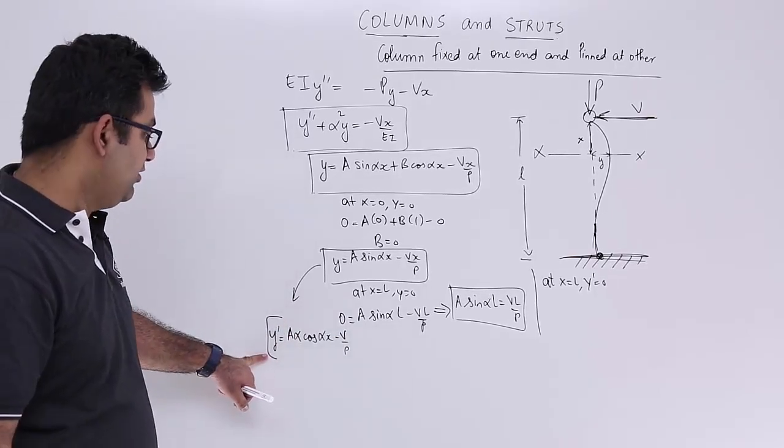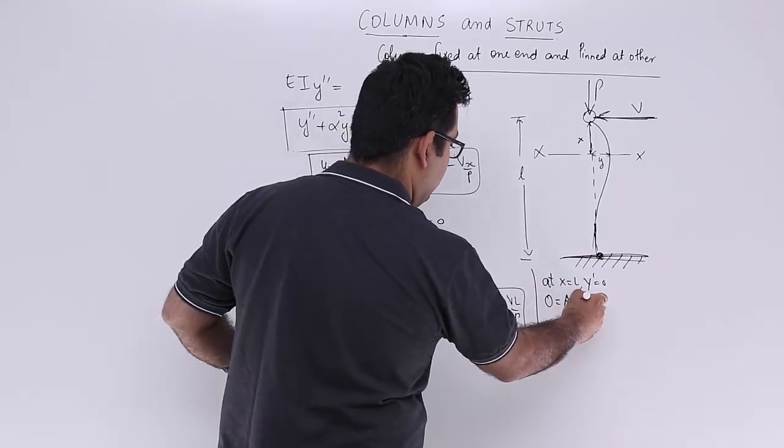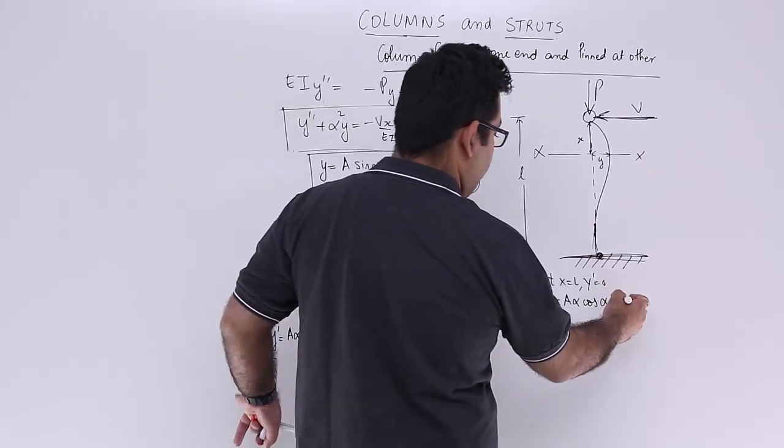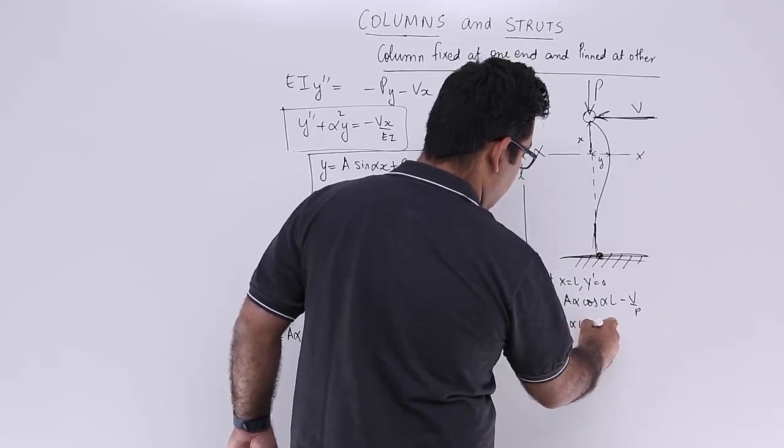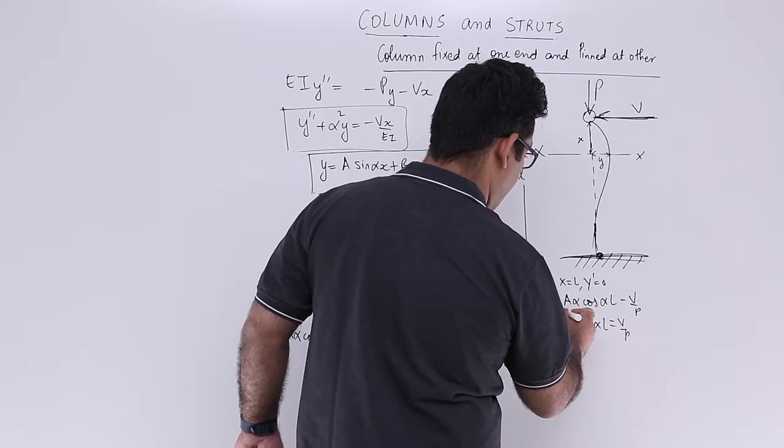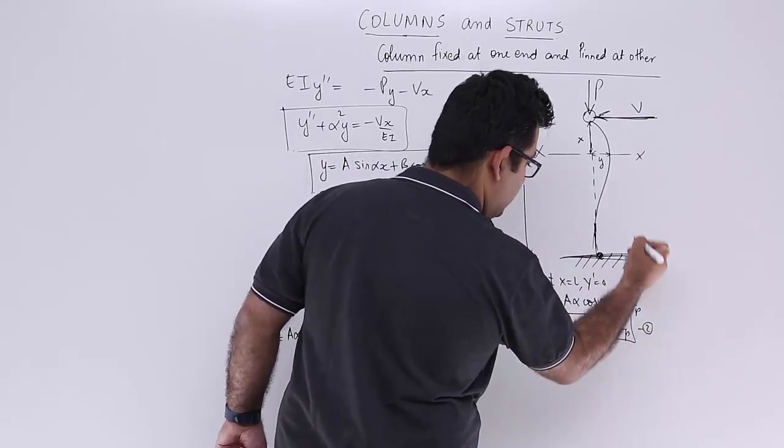So when you put x is equal to l you get 0 is equal to a alpha cos alpha l minus v by p. So this will give you a alpha cos alpha l is equal to v upon p. So this is let us say equation 1 and this is equation 2.